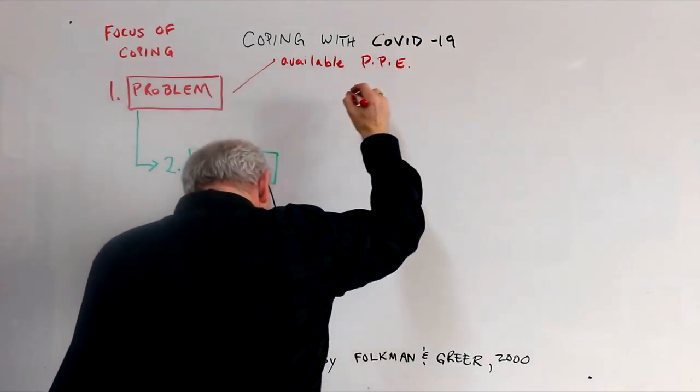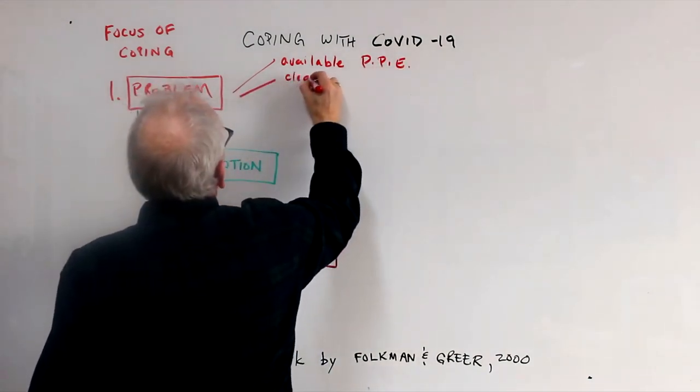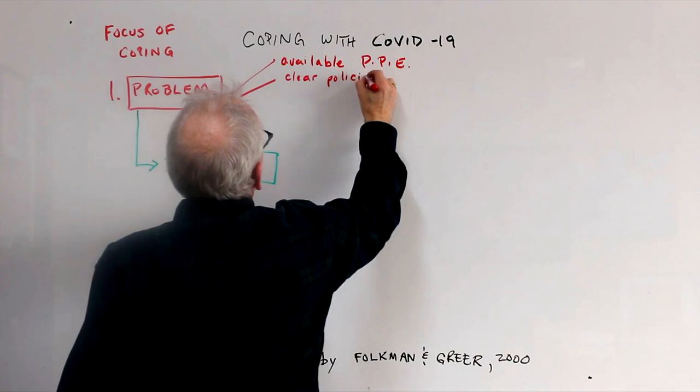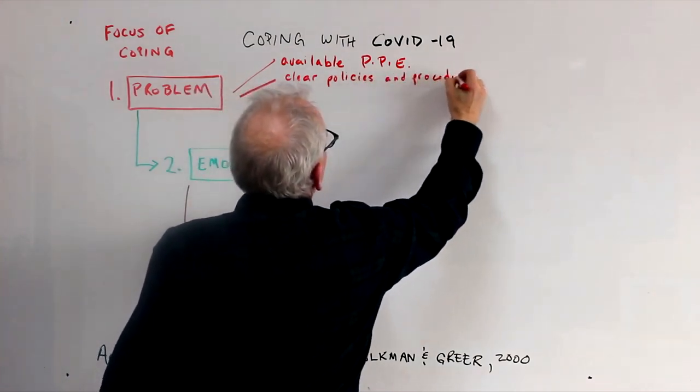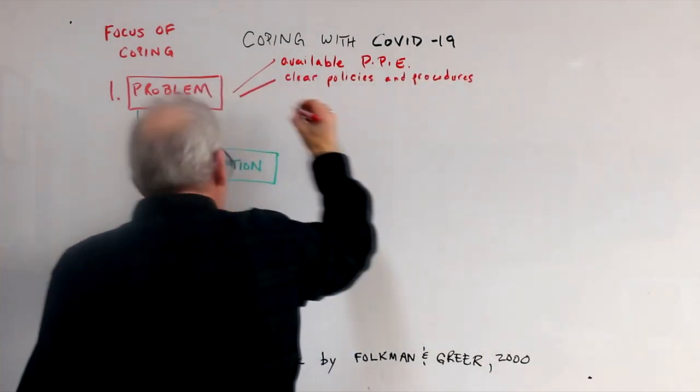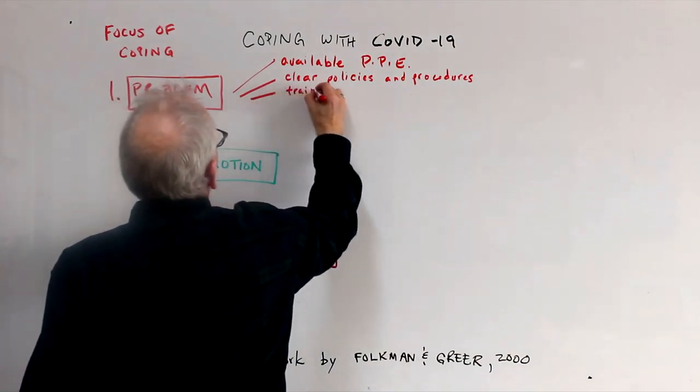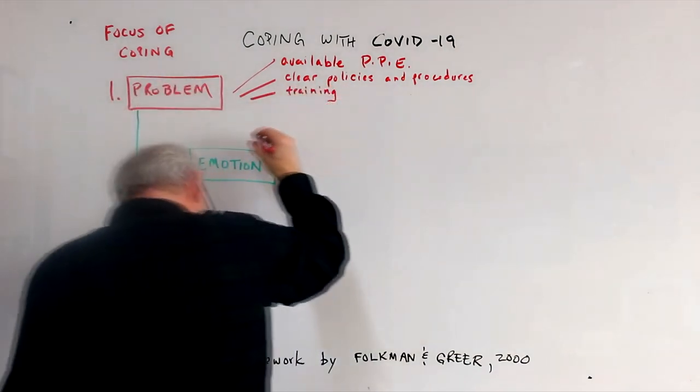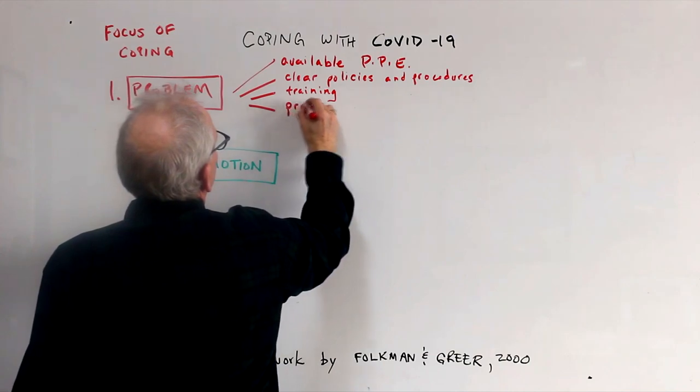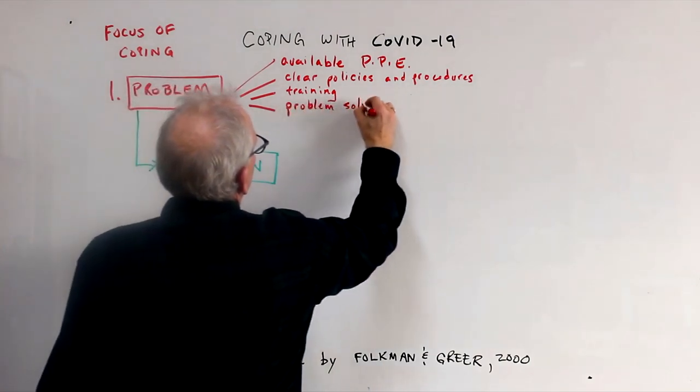We start by protecting ourselves and minimizing personal risk, which in this case means having supplies of protective equipment, clear policies and procedures, and having effective training in those procedures. We use our experience and working relationships with colleagues to solve the complications that inevitably arise because each workplace is at least a little different than others.